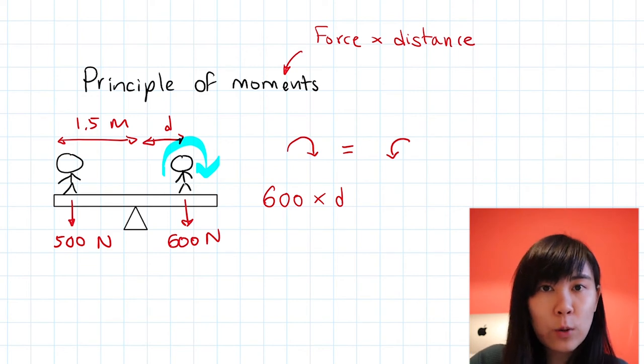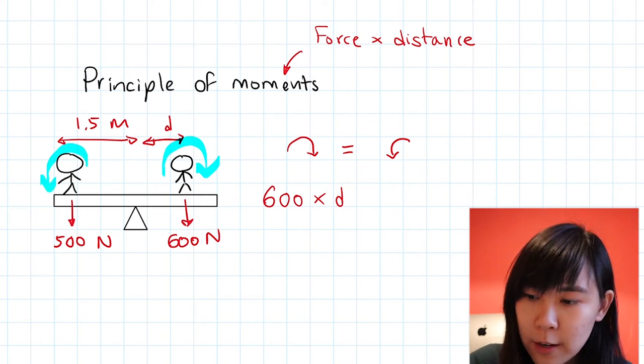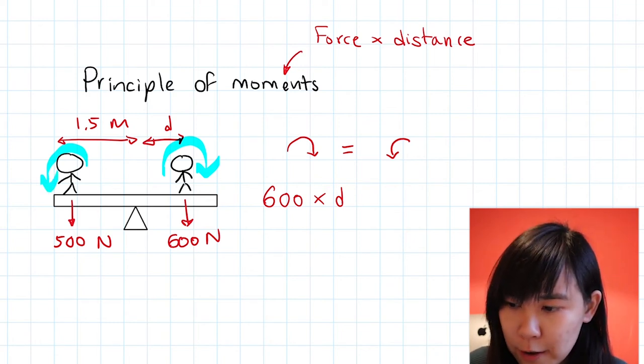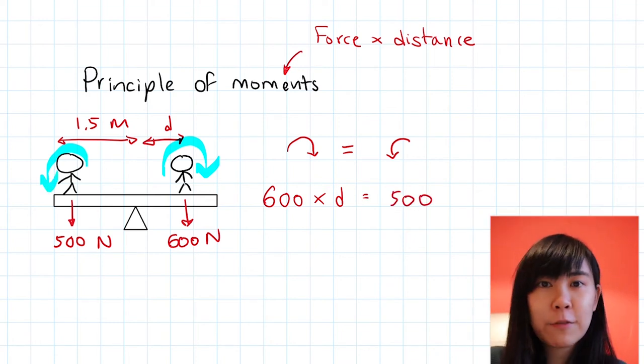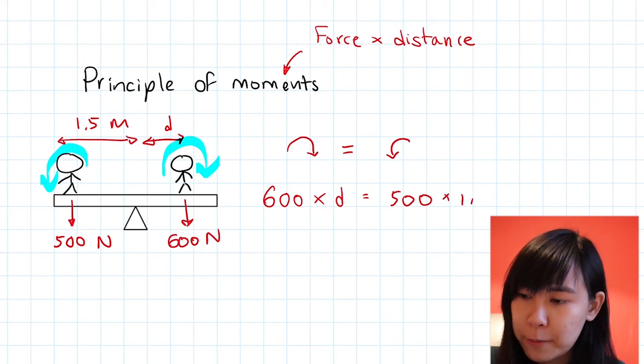So this is equal to the anticlockwise moment, which is caused by the guy on the left-hand side. And his weight is 500, and the distance from the pivot is 1.5 meters.